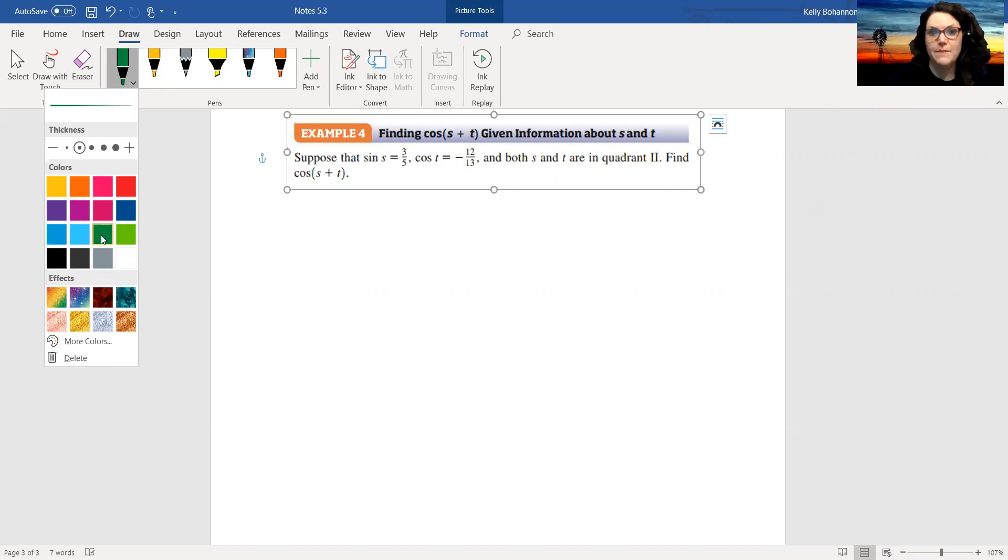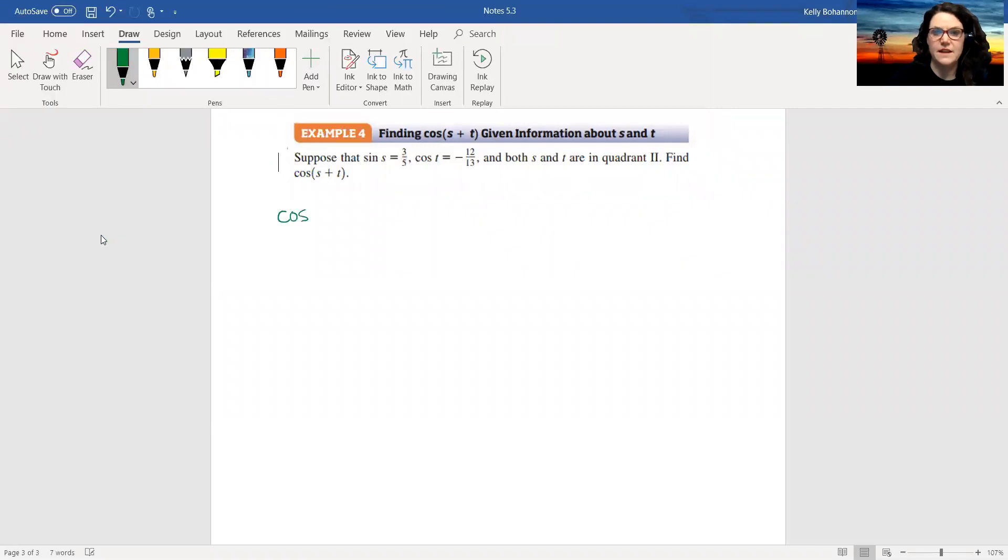Now here's the problem. If I'm going to use my cosine sum identity, which I am, let me write it down real quick. I'm going to use the s and t like they have. So cosine s plus t is going to equal cosine s cosine t minus sine s sine t.